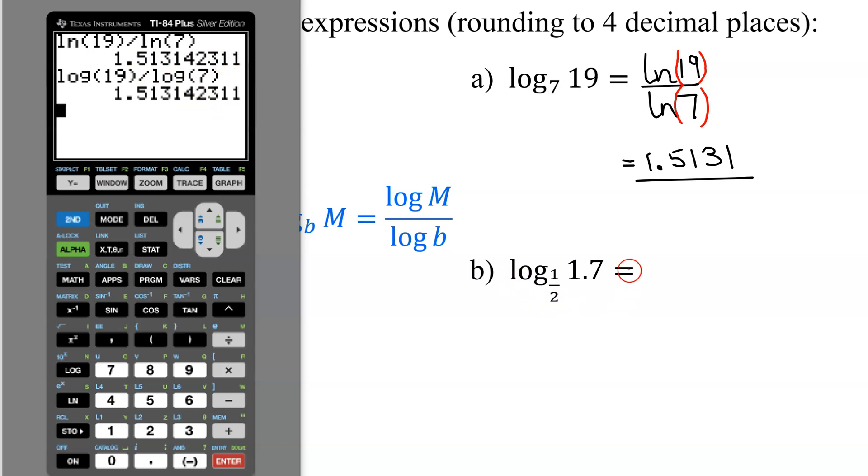Now going on to part B, I need to find log base one-half of 1.7. So I'm going to use the second version this time, using the common log. It's going to equal the common log of 1.7. Remember, the calculator is going to open parentheses here, so I'm going to close them after, divided by the common log of my base, which is one-half.